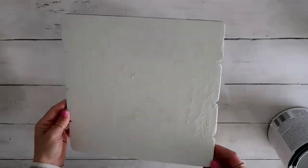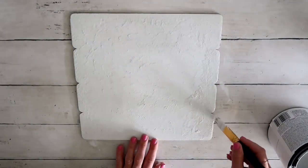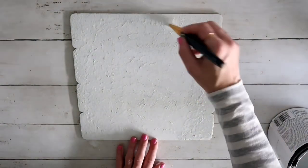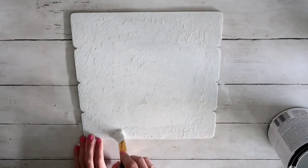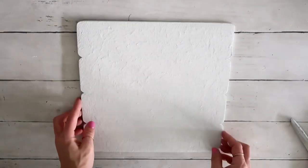After the first coat of dabbing the paint, this is how it looks like. Now I'm going to add one more coat and I'm just dabbing it because I wanted that beautiful texture. After it was dried, this is how it looks like. I also painted the sides as well.